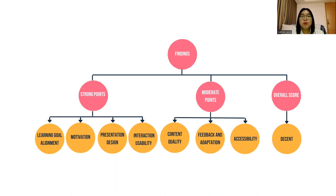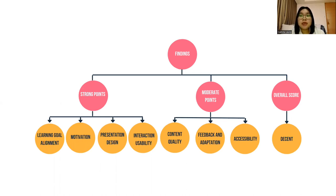Based on the findings in Table 2, the strong points can be found in learning goal alignment, motivation, presentation design, and interaction usability. Meanwhile, moderate points are given to content quality, feedback and adaptation, and accessibility, because they still contain some weaknesses. The overall score of the English learning module is 4, indicating that it is a decent learning tool to teach young language learners.